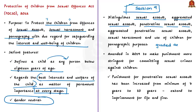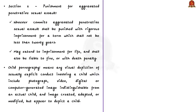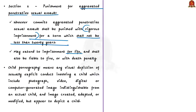The act was amended in 2019 to make punishment more stringent for sexual offenses against children. For example, punishment for penetrative sexual assault was increased from a minimum of 7 years to a minimum of 10 years, which may extend to imprisonment for life and shall also be liable to fine. Under Section 6, dealing with punishment for aggravated penetrative sexual assault, whoever commits such assault shall be punished with rigorous imprisonment for a term not less than 20 years, which may extend to imprisonment for life — meaning the remainder of the person's natural life — and shall also be liable to fine or even death penalty.